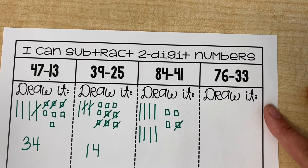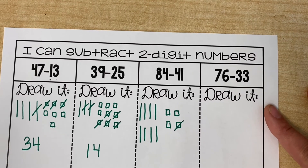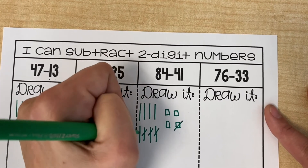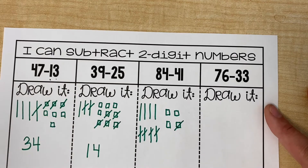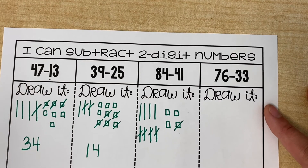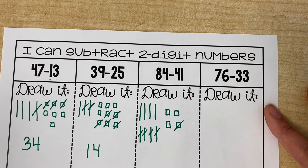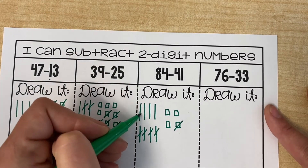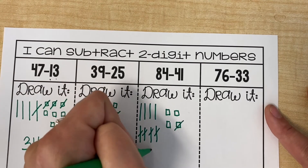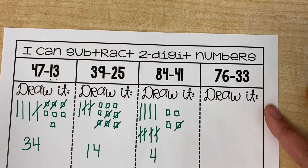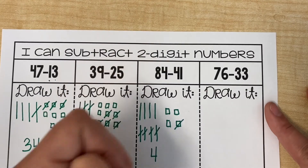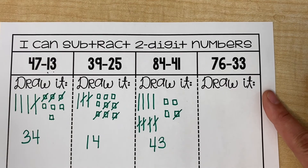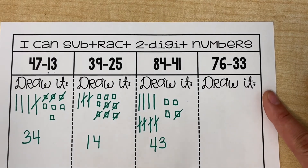Now what about our 10 rods — how many do I need to remove? Great job, I need to get rid of 4: 1, 2, 3, 4. Now what do I need to do? That's right, I need to see how many I have left. I'm going to count my 10 rods: 1, 2, 3, 4 — I have 4 tens left. And I'm going to count my 1s: I have 3 one cubes left. So the answer to 84 minus 41 is 43.